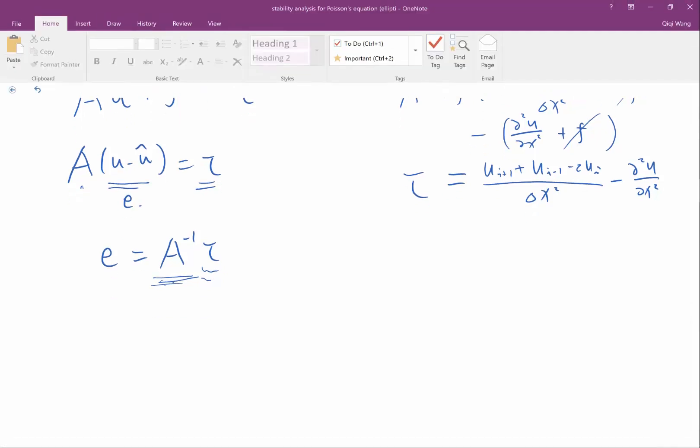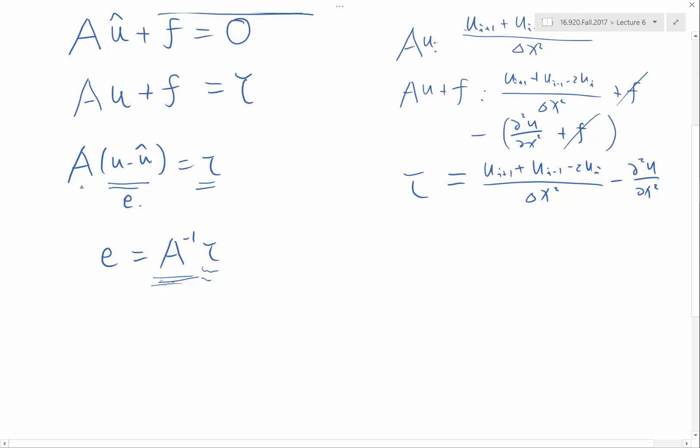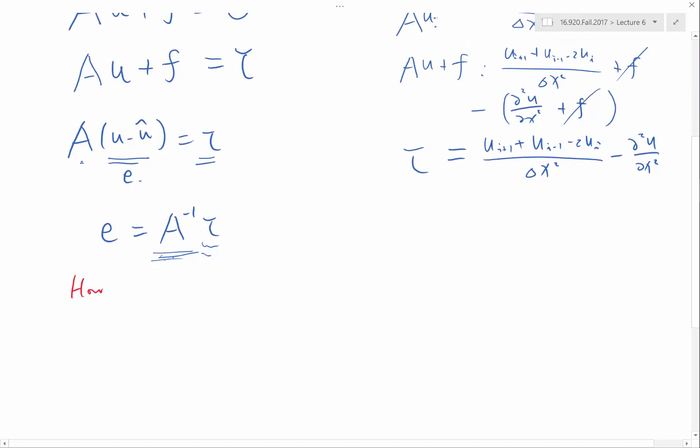Another question that is equally valid is how does error in solving Au equals minus f affect the solution? It turns out that elliptic equations are not so good in this particular analysis.